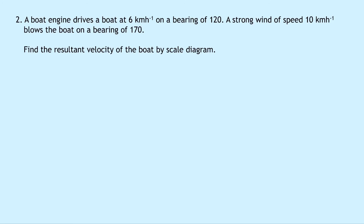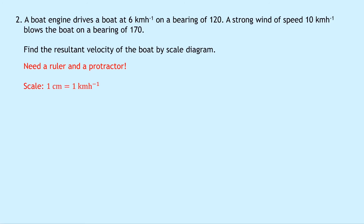Question 2 says that a boat engine drives a boat at 6 kilometres per hour on a bearing of 120. A strong wind of speed 10 kilometres per hour blows the boat on a bearing of 170. Find the resultant velocity of the boat by scale diagram. You need a piece of paper and a pen or pencil — you're going to need pretty much a full A4 page to do this. The question is specifically asking us to use the scale diagram, so we can't use any calculation method here. You'll also need a ruler and a protractor. Our first step is to choose a scale. Because we've got speeds of 6 and 10 kilometres per hour, the easiest scale would probably be 1 centimetre equals 1 kilometre per hour, giving us a 6 centimetre line and a 10 centimetre line on our page.